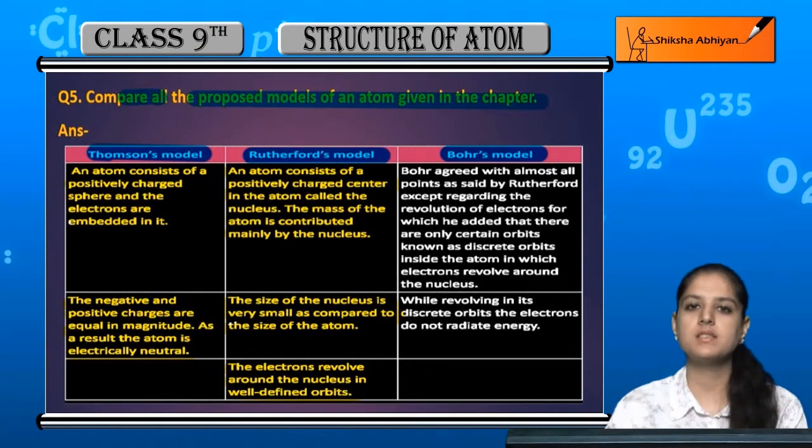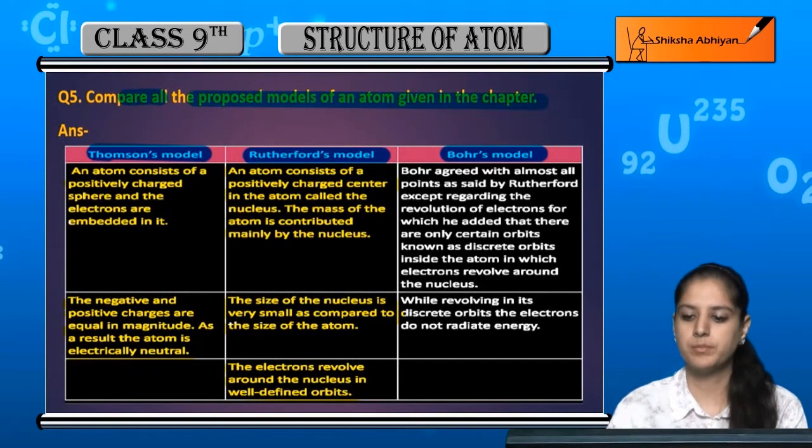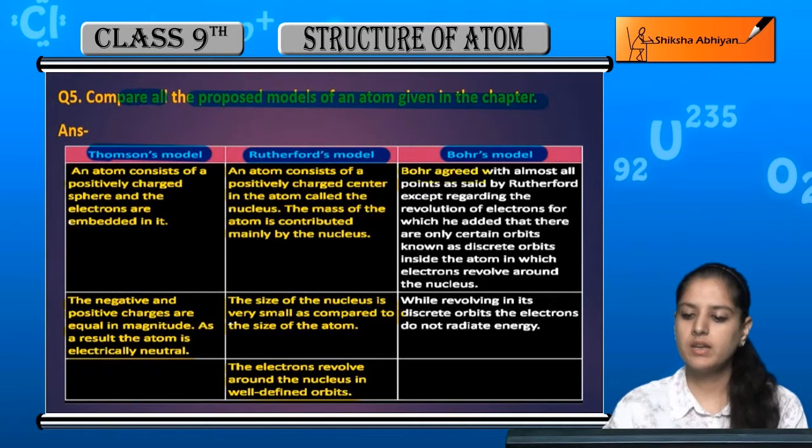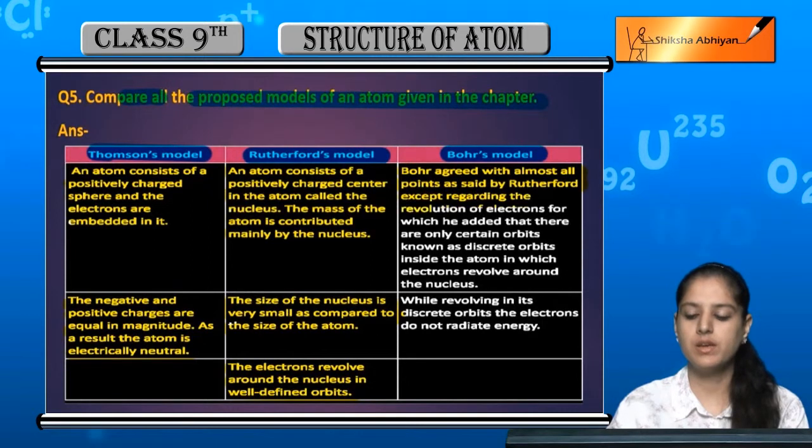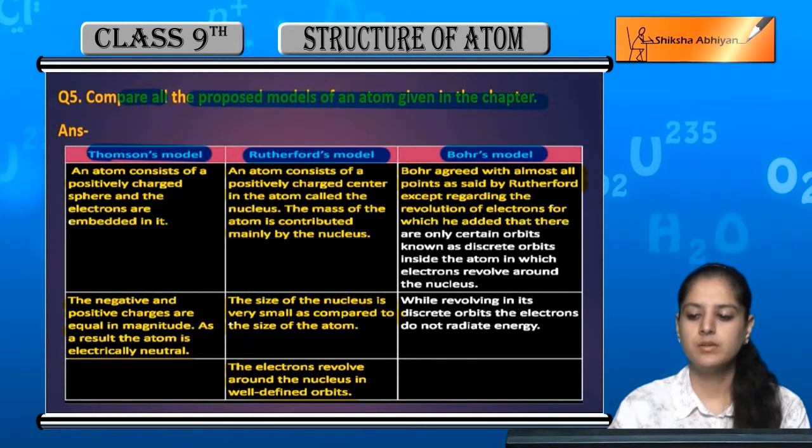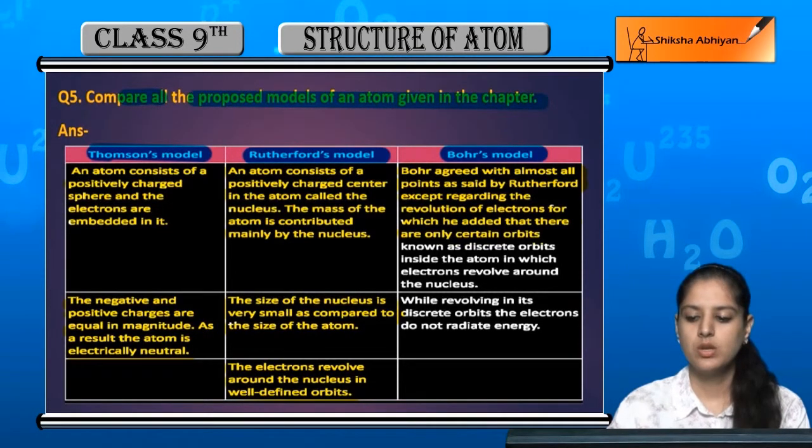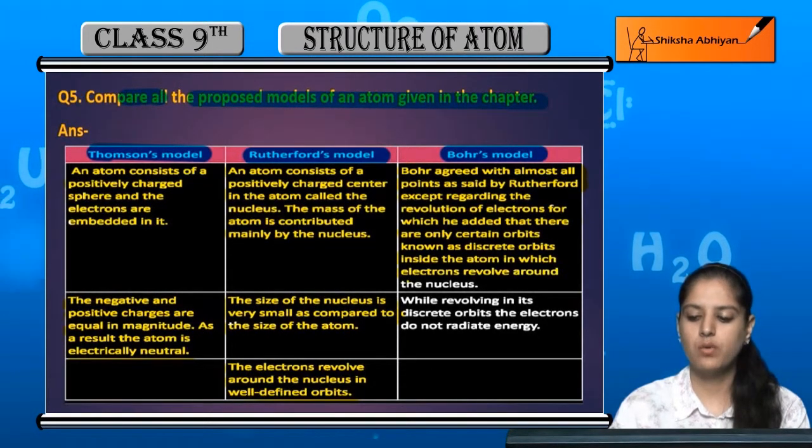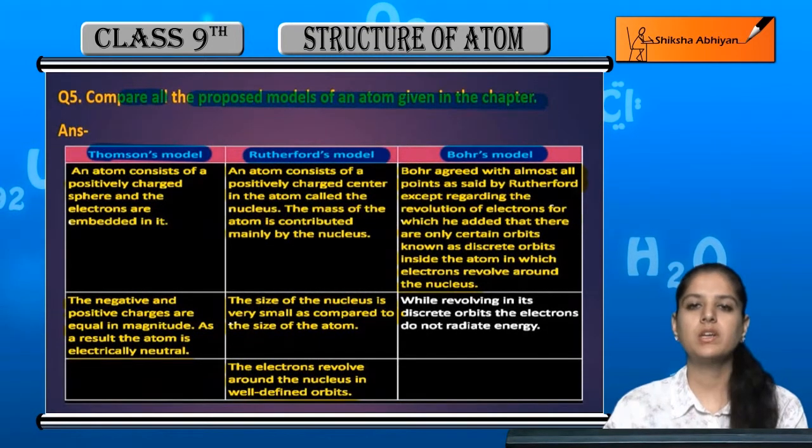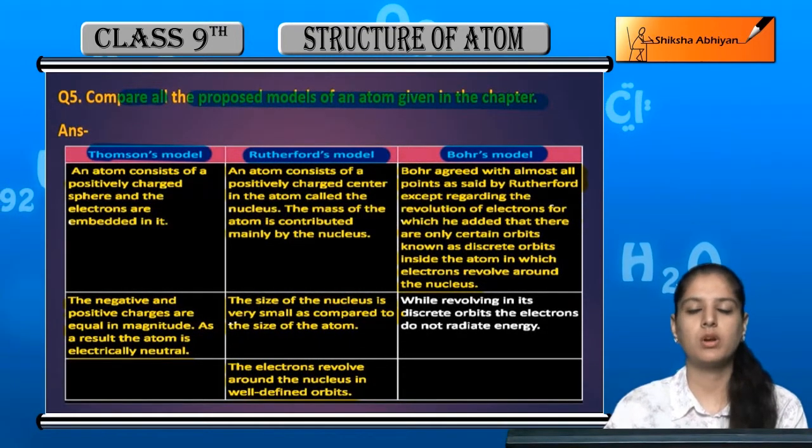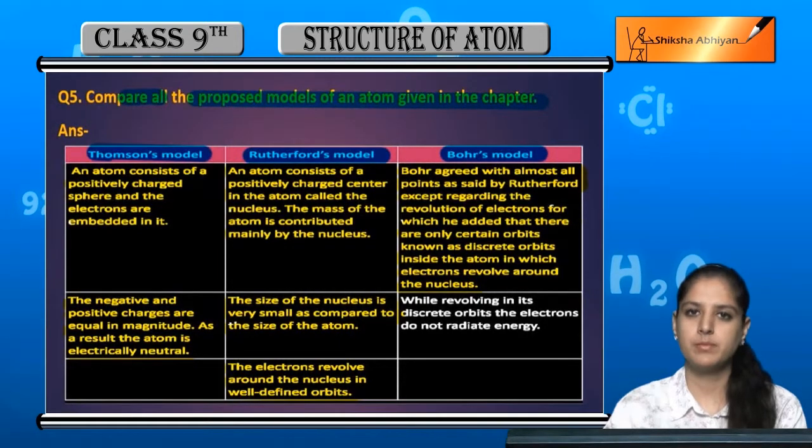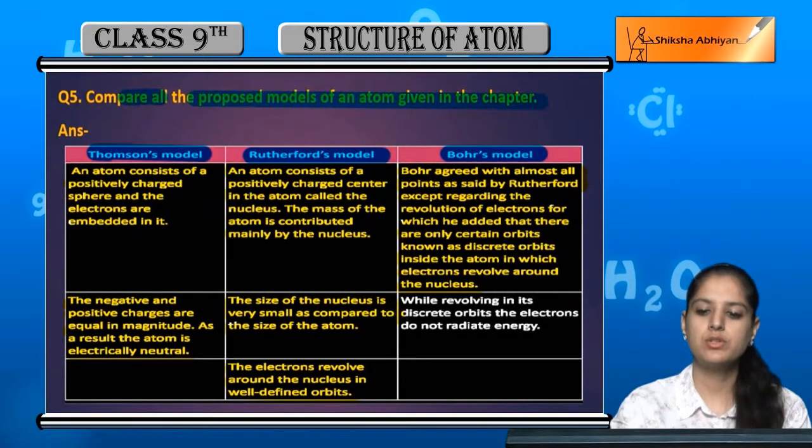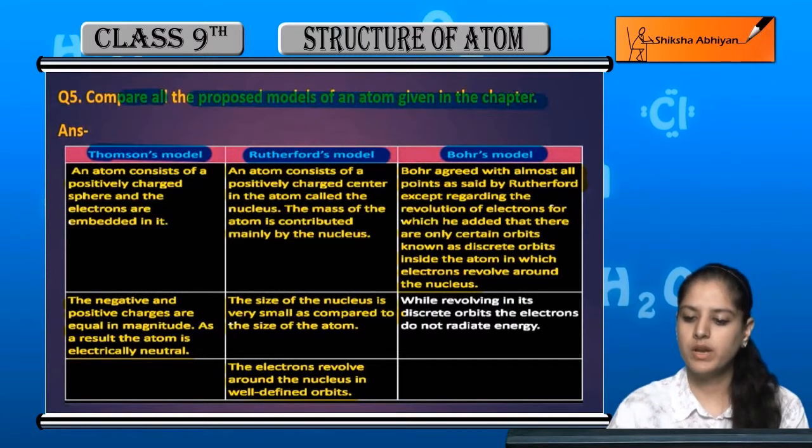Now talking about Bohr's model. Bohr agreed with almost all points as said by Rutherford, except regarding the revolution of electrons. For this, he added that there are only certain orbits known as discrete orbits inside the atom in which electrons revolve around the nucleus. So in Bohr's model, most things from Rutherford's model were accepted, but the only point that Bohr did not accept was the revolution of electrons.